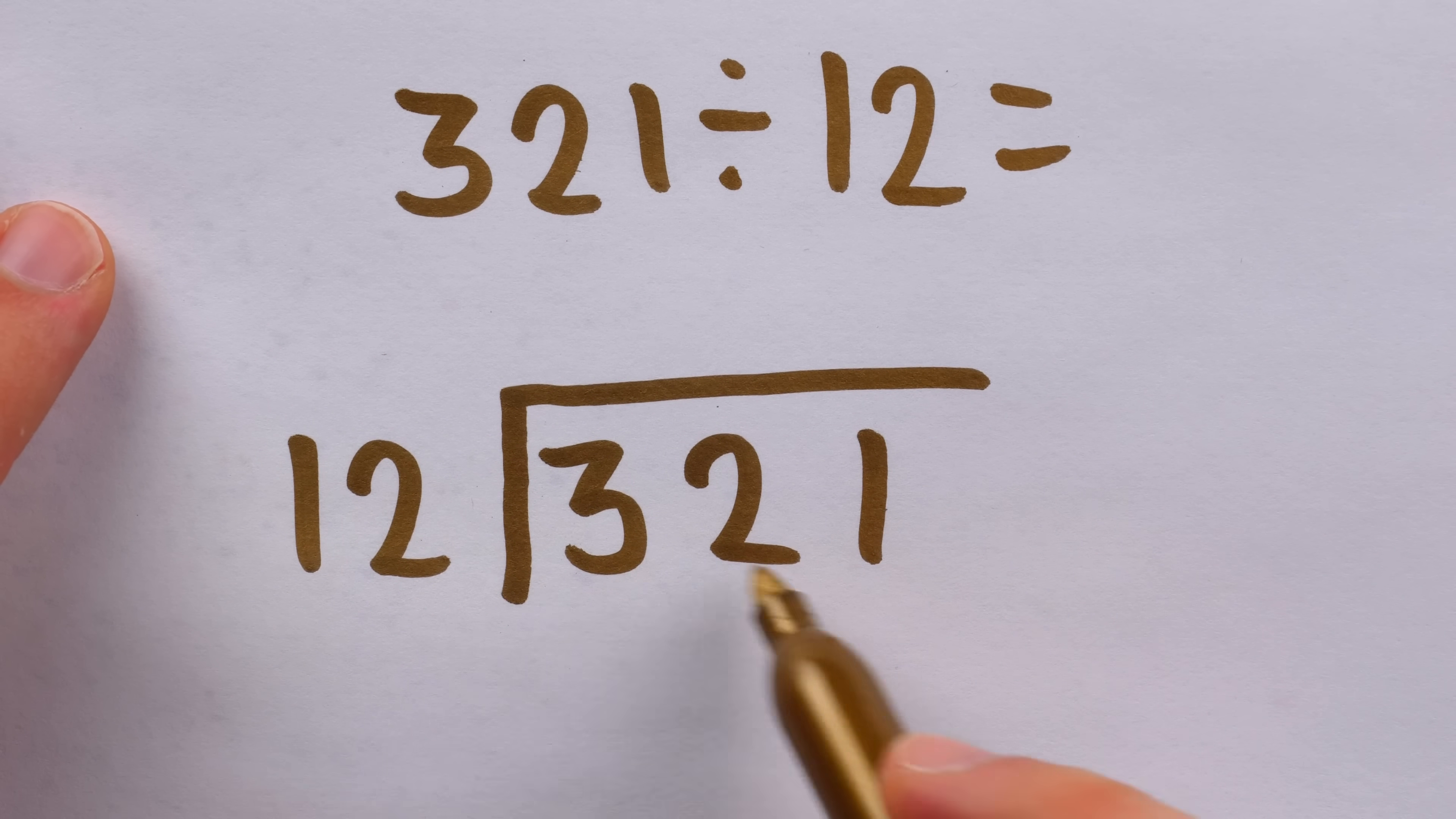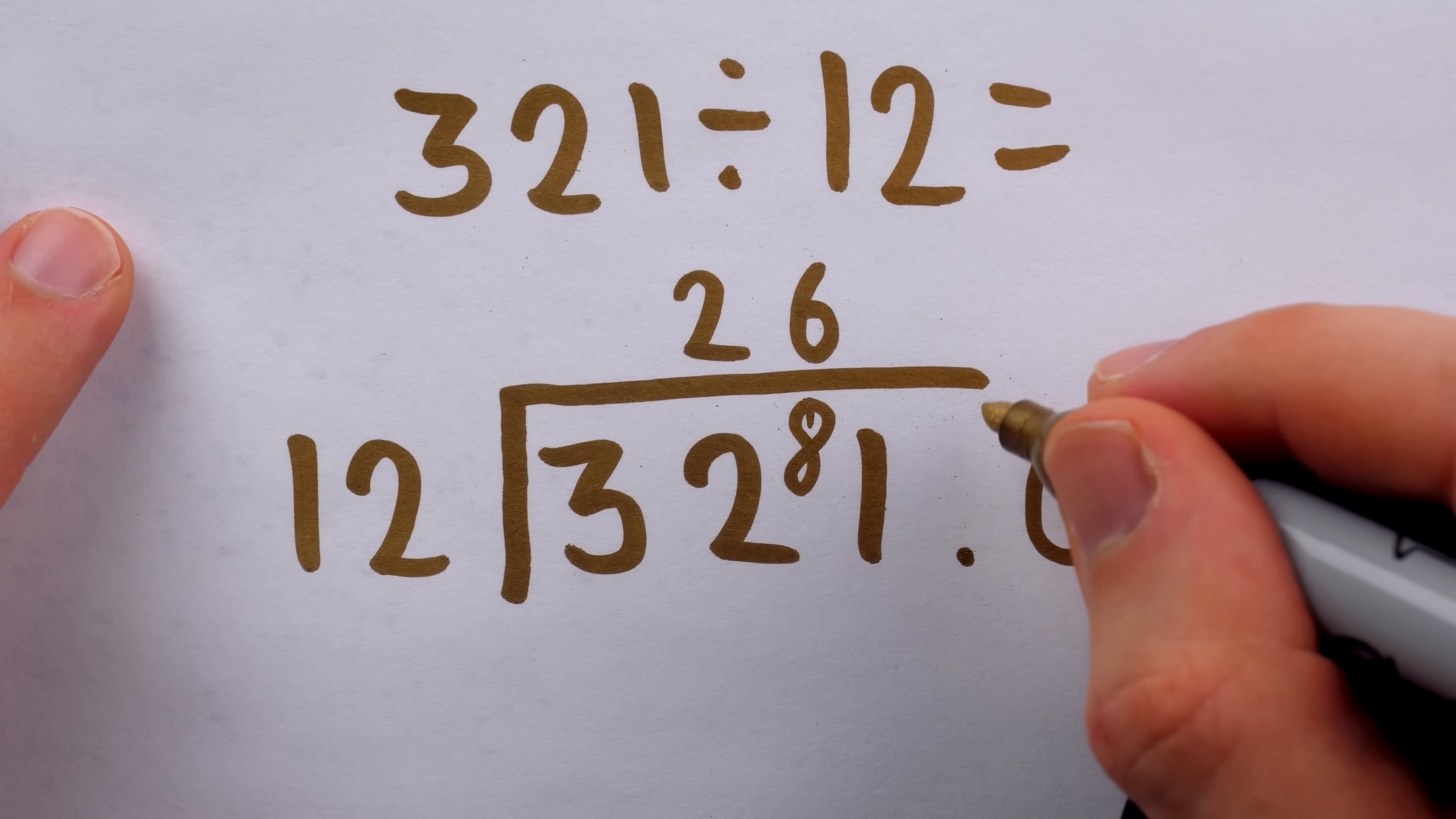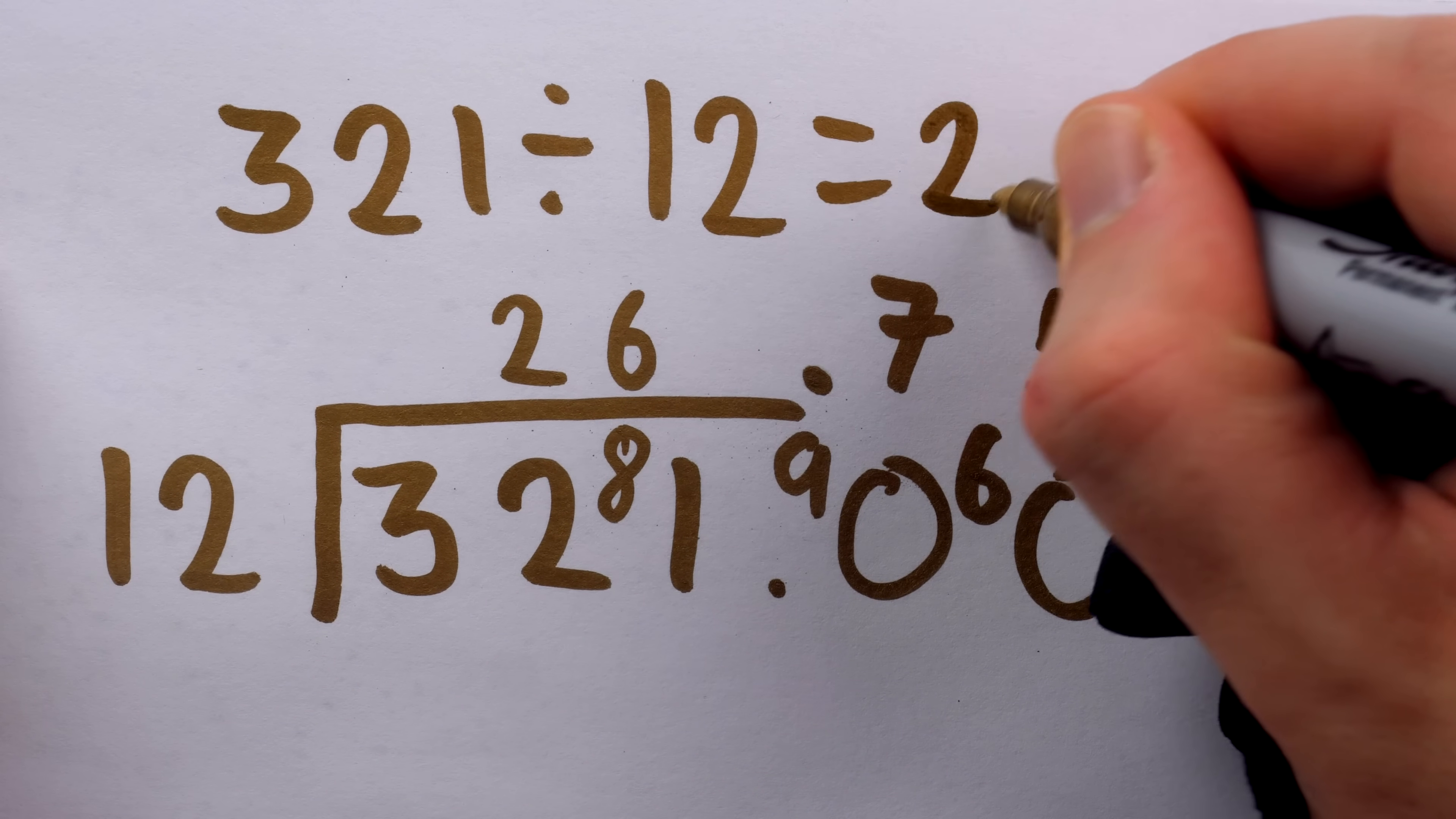Does 12 go into 3? No. Does it go into 32? Yes, it goes into 32 twice. 12 times 2 is 24, with a remainder of 8. So then we're looking at 81. Does 12 go into 81? Yes, it goes into 81 six times, right? 6 times 12 is 72, so we would have a remainder of 9. So now we're dealing with decimals. I'll just put a point there. We would have a 0 there, but we had that remainder of 9. So now we're looking at 90. Does 12 go into 90? It goes into 90 7 times, right? The 7 times 12 is 84, so we'll put a 0.7. It goes into 90 seven times, with a remainder of 6. So we also add a 0 there, and now we'll put a 6 there. That's the remainder. Does 12 go into 60? Yes, 5 times. There's the answer, 26.75.